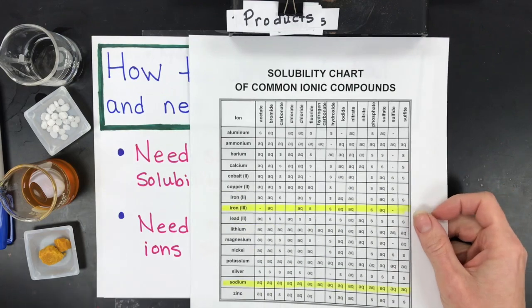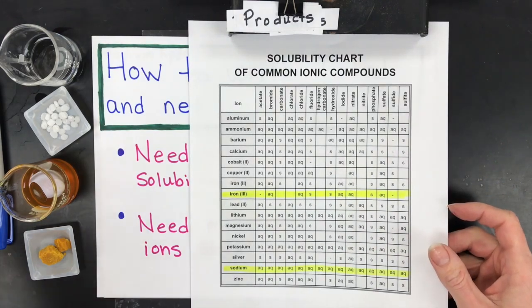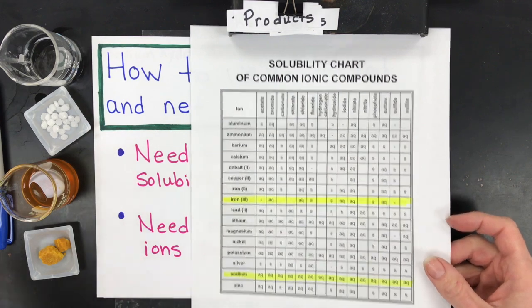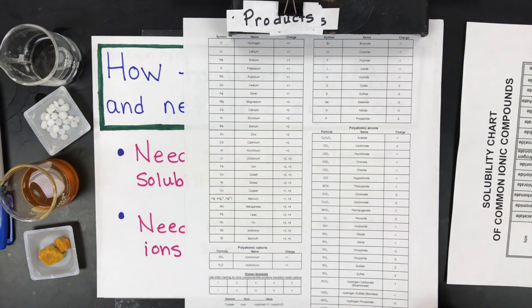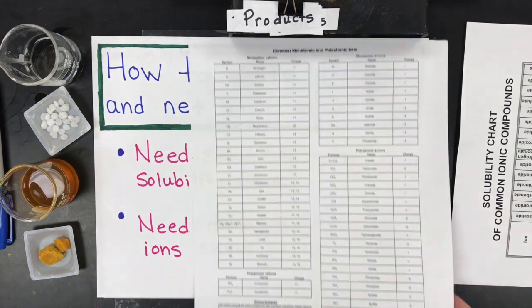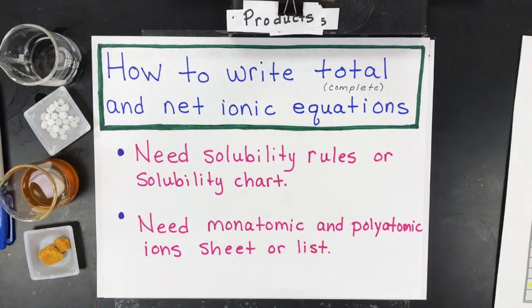So here is a solubility chart that I am going to hand out to my students and hopefully you have one. You might even have to have these rules memorized and then you might have to have a list or have all of the common monatomic and polyatomic ions memorized also. So before we get started make sure you have those two things.